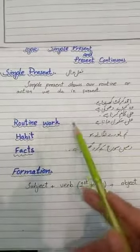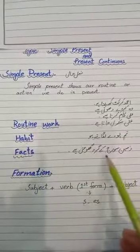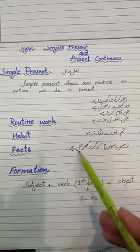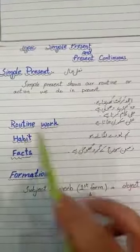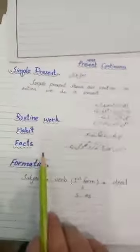These show our routine work, our habits, and facts. Like Ali goes to school - this is his daily routine. You plant trees - this is your habit. A fact is the earth revolves around the sun. All these end with 'ta hai', 'tay hain', 'ti hai', etc. So these show facts, routines, and habits. What is the formation?